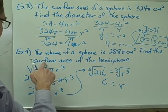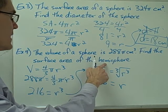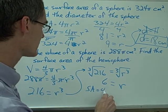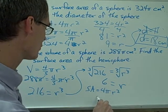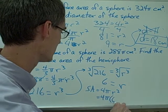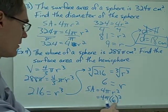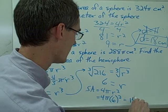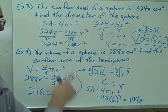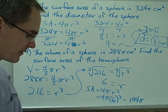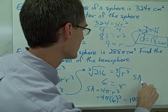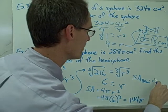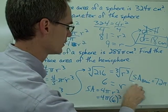Now I know the radius is 6. It asks for the surface area of the hemisphere. I have the formula for the surface area of the entire sphere: 4 pi times radius squared, so that's 36 times 4 pi, which is 144 pi. But I want the surface area of the hemisphere, which means I take half of that. So the surface area of the hemisphere is half of 144 pi, which is 72 pi.